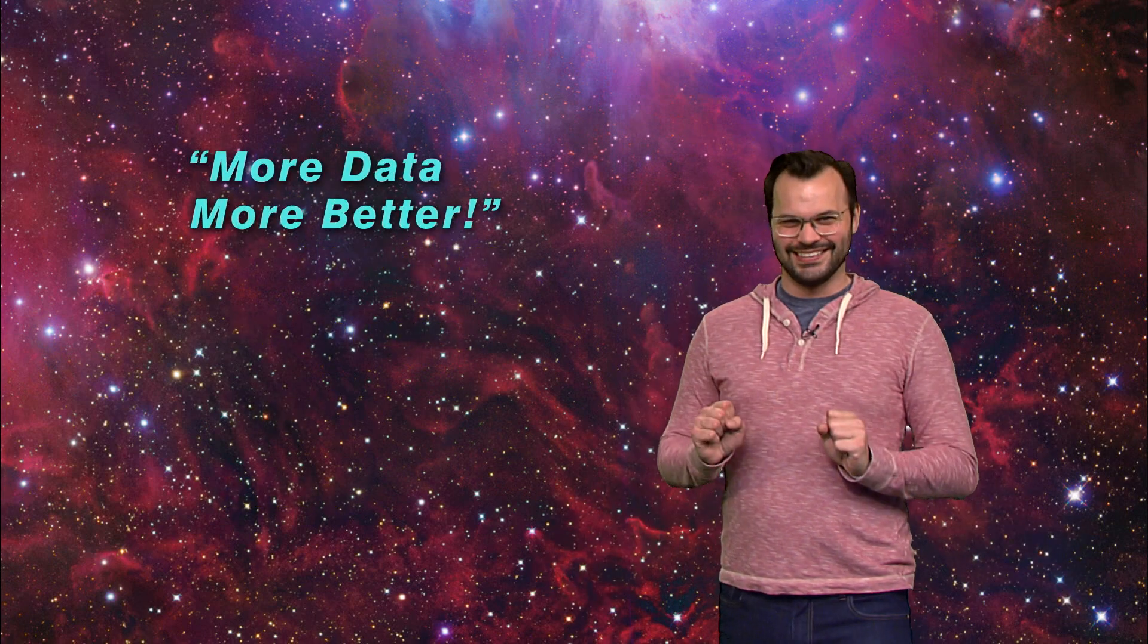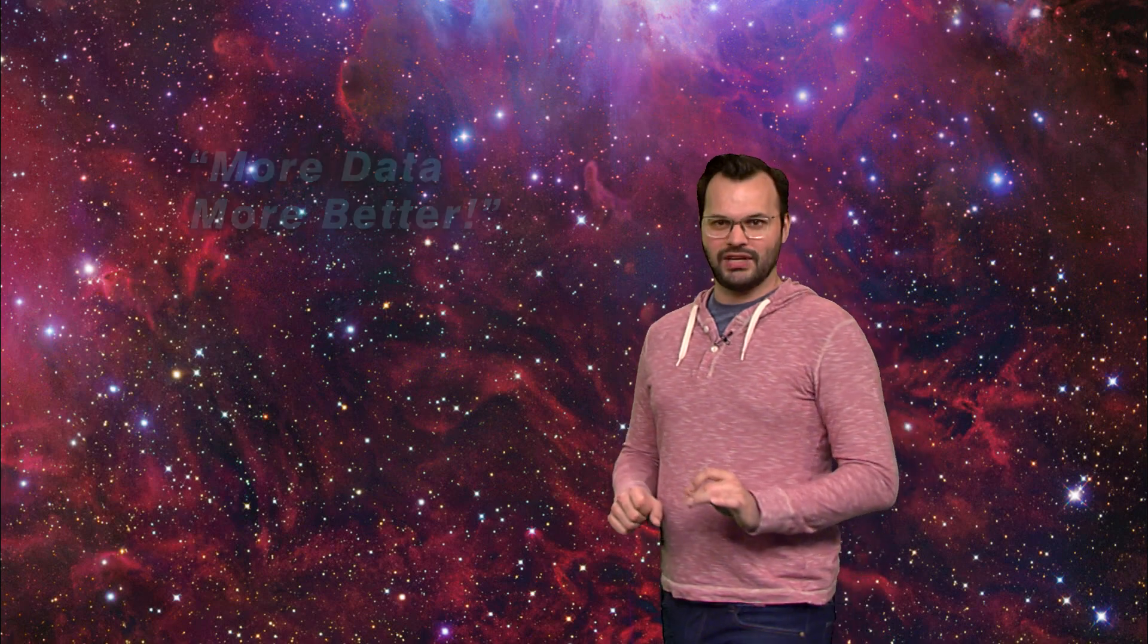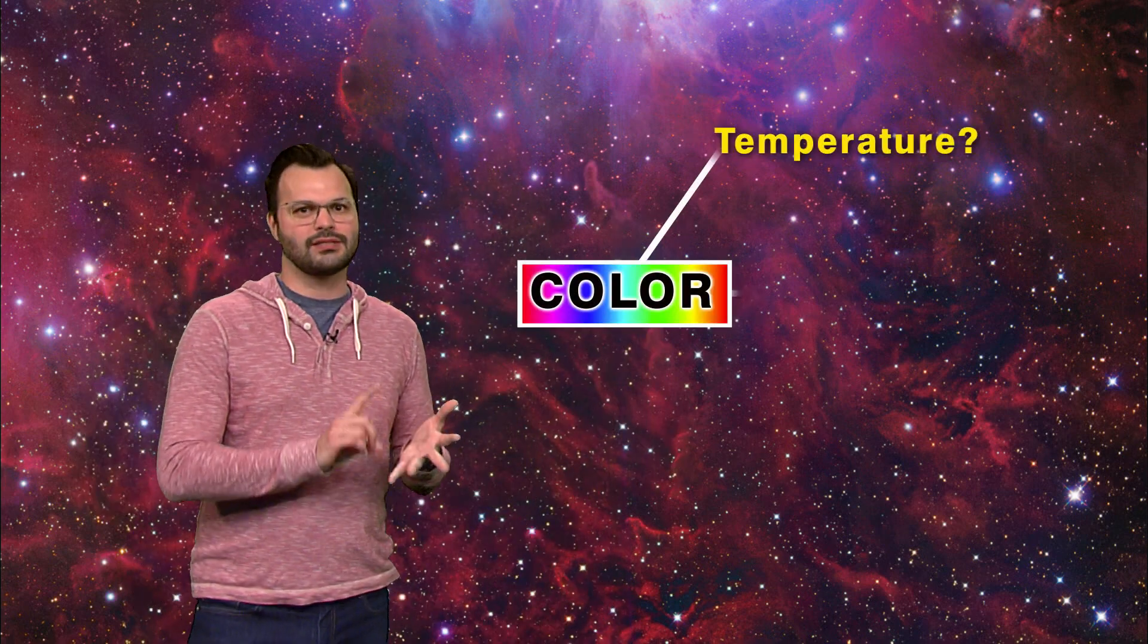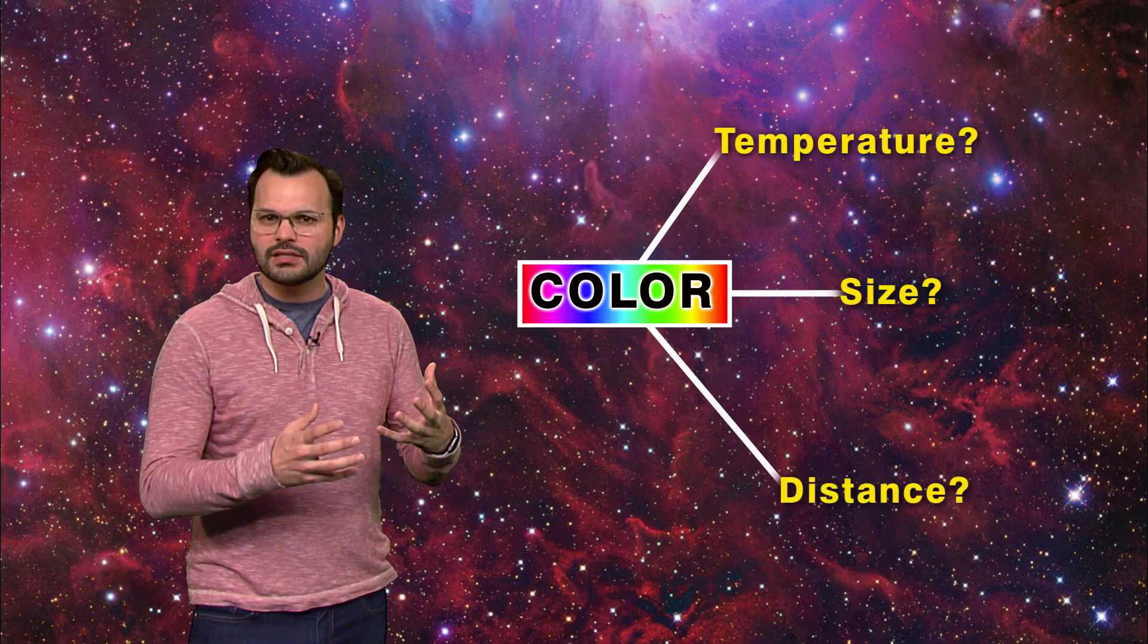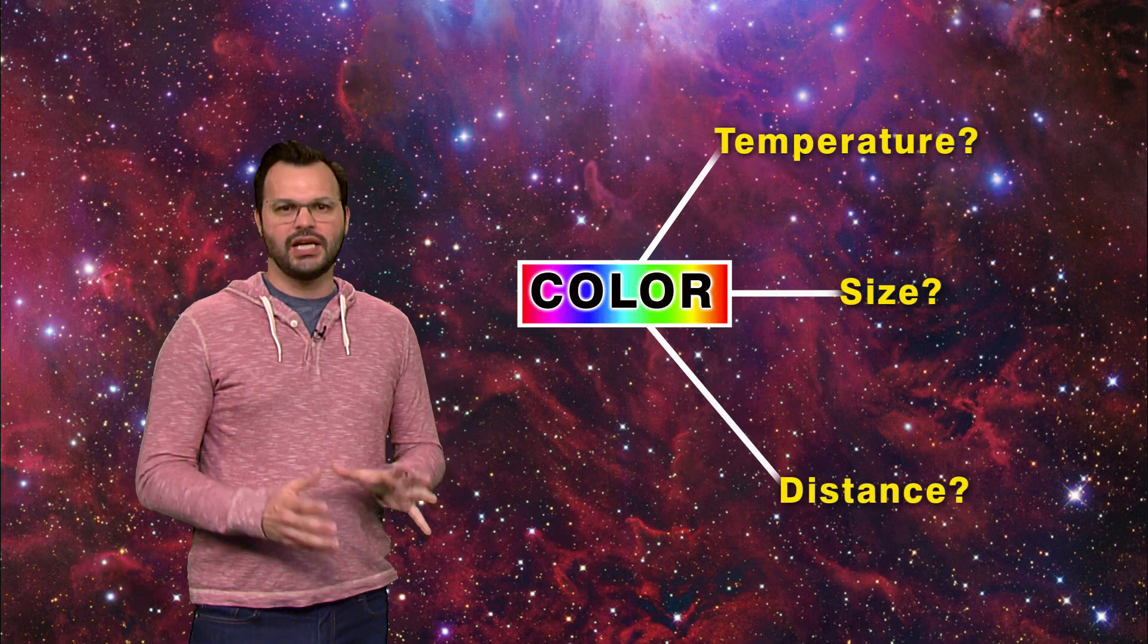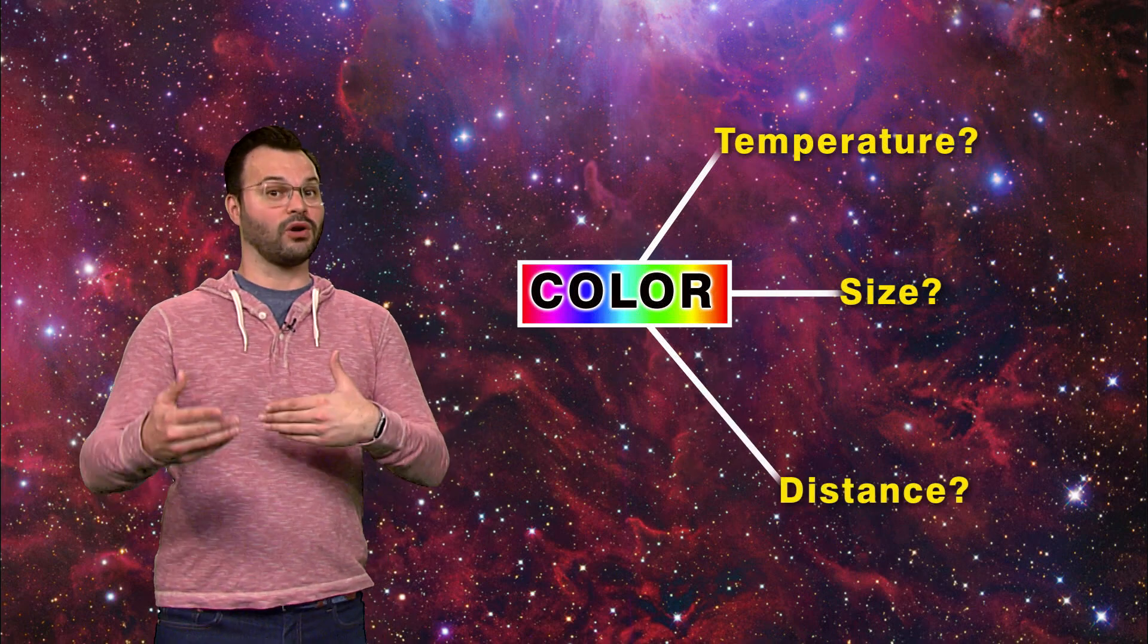More data, more better. Then we would look at all the data we've gathered and try and use that to explain the colors of the stars. For example, which property is most closely related to the color of the star? Is it the temperature? The size? The distance from us? From the data, an explanation or hypothesis is then put forth.